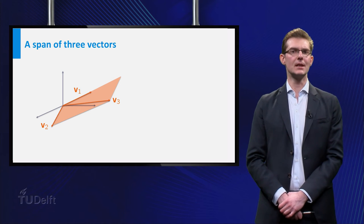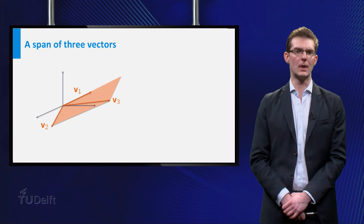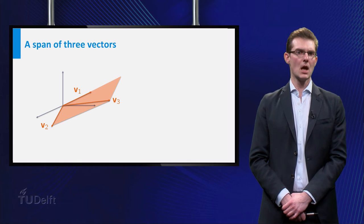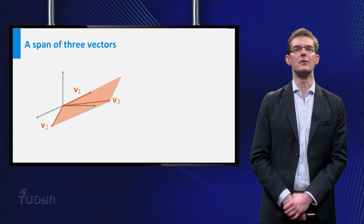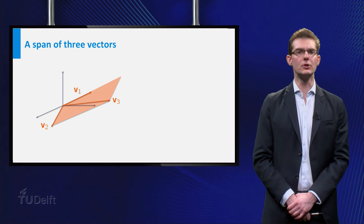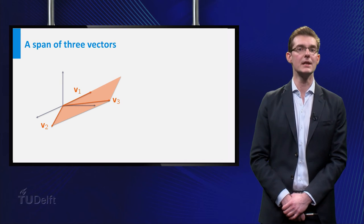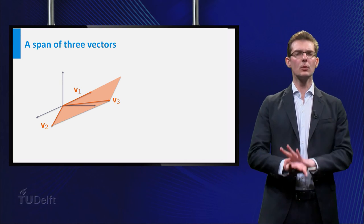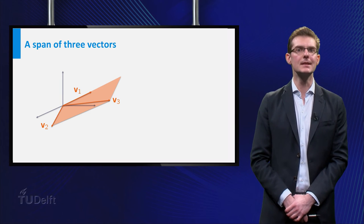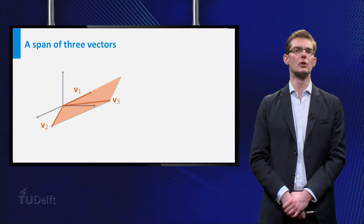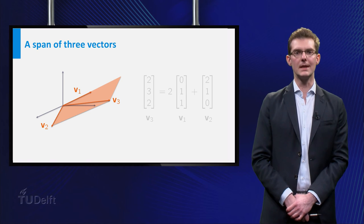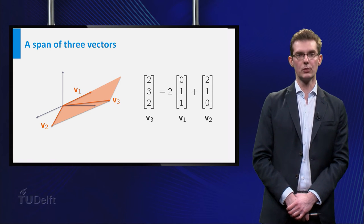How could we have seen that V3 lies in the plane defined by V1 and V2 by just looking at the coordinates? To be an element of the plane spanned by V1 and V2, the vector V3 must be equal to a linear combination of these vectors. Now with a little bit of calculation you can see that this is indeed the case. In particular, the vector V3 is equal to 2 times V1 plus V2.